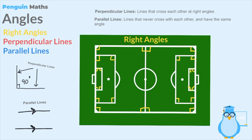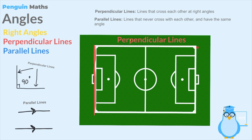Moving on to perpendicular lines - we know that wherever there is a right angle, there will be an equivalent set of perpendicular lines. For example, taking one particular line on the pitch, we know it forms a right angle in two areas, and therefore it must be perpendicular to both the lines it meets. So we can say those two lines drawn on the football pitch are perpendicular lines.